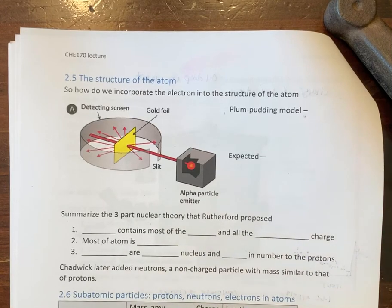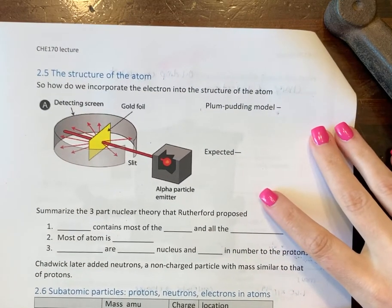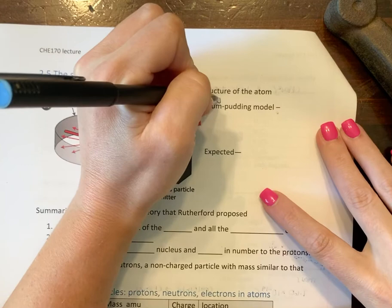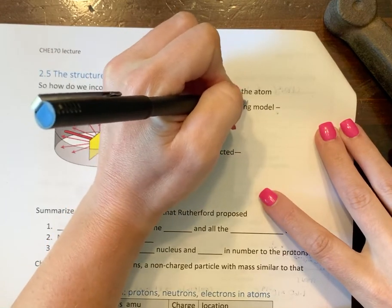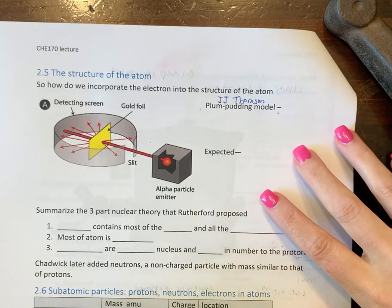Alright, so we had JJ Thompson and Robert Milliken doing some work with electrons, and so atoms are not indivisible after all. JJ Thompson said, well, if they're not indivisible, we know we've got these negatively charged particles.